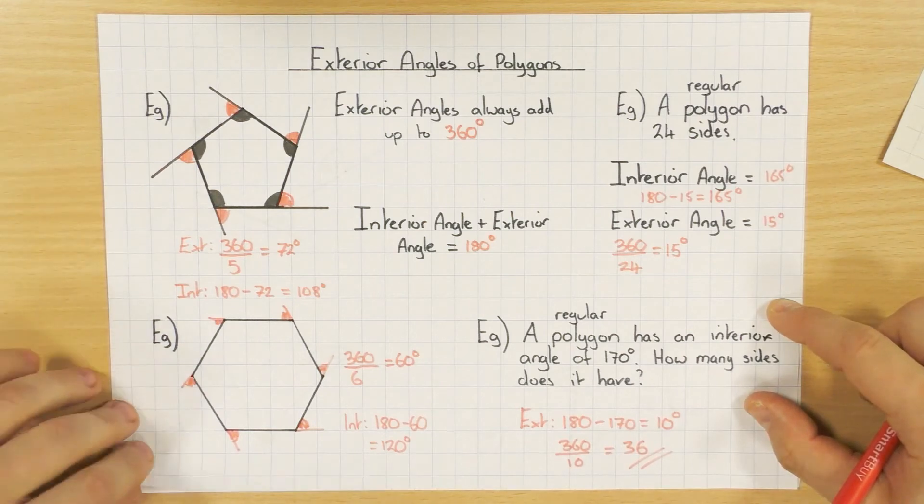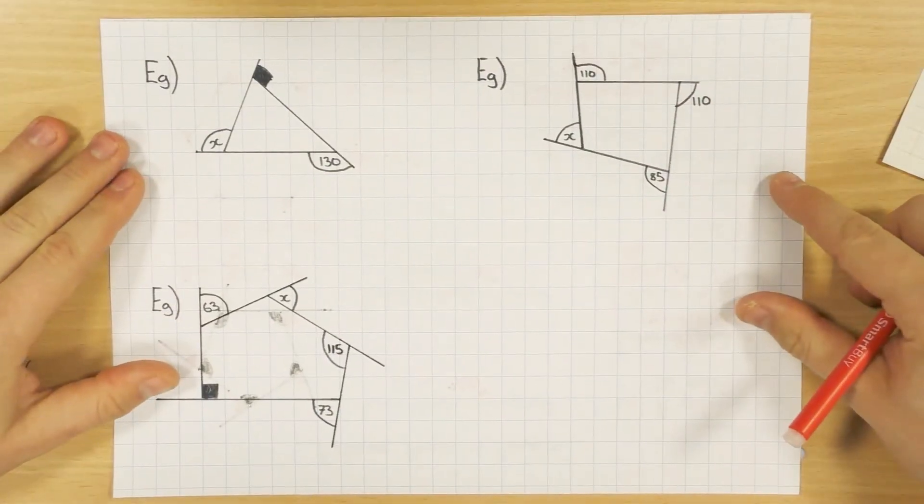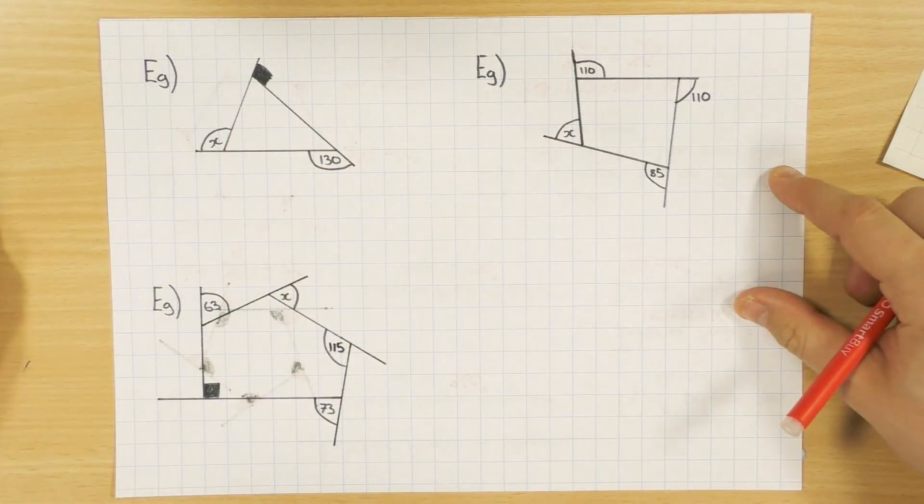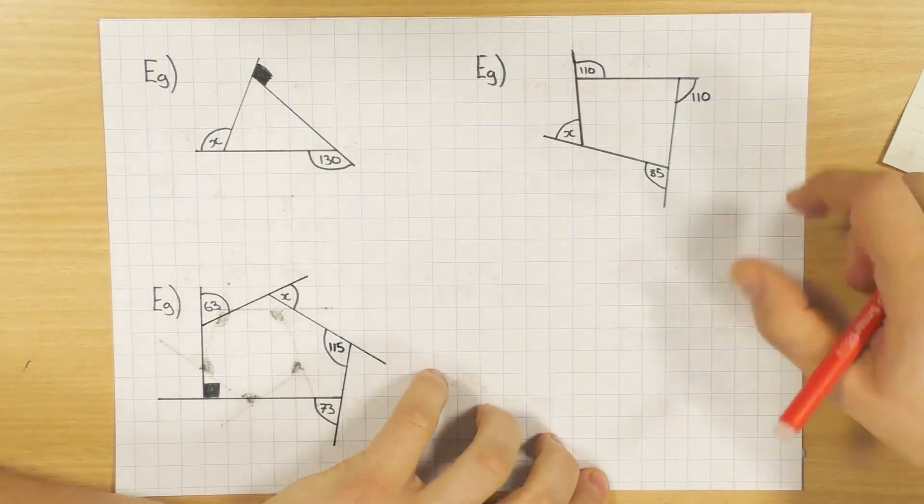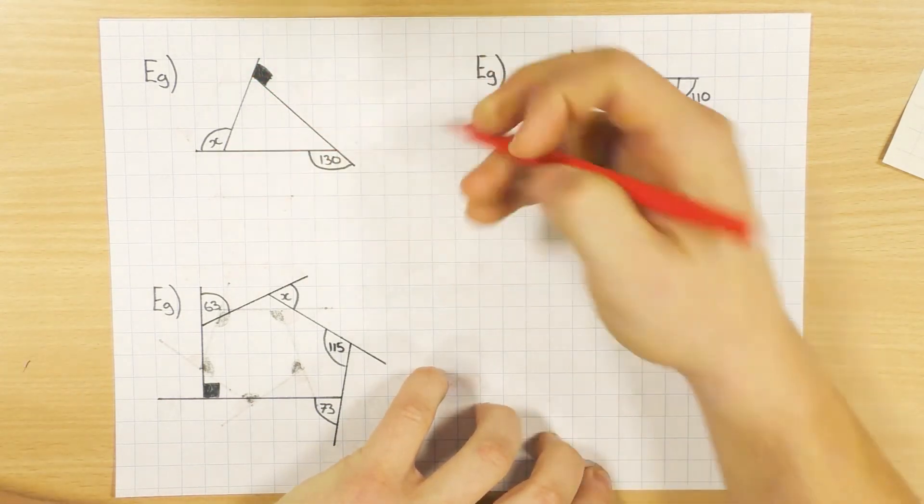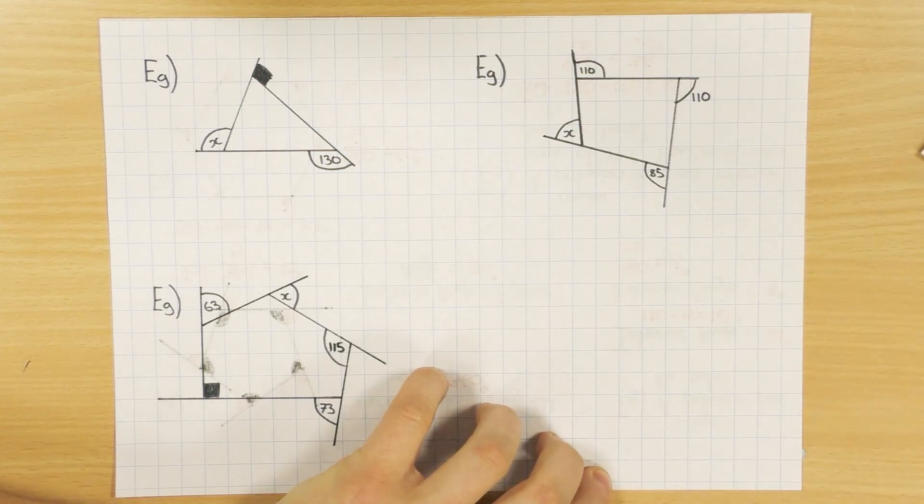So these ones have all been regular polygons. Let's have a look when it's irregular. So here's some irregular ones here. The angles and the sides are a bit different. But the rule is still the same thing. The interior and the exterior add up to 180, and all the exterior angles also add up to 360. So the rules are still exactly the same.